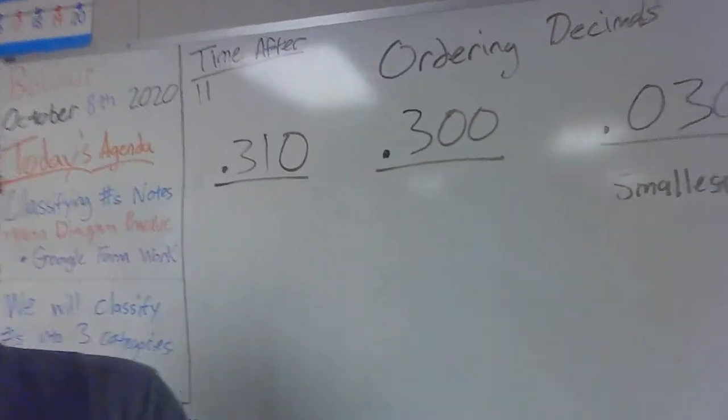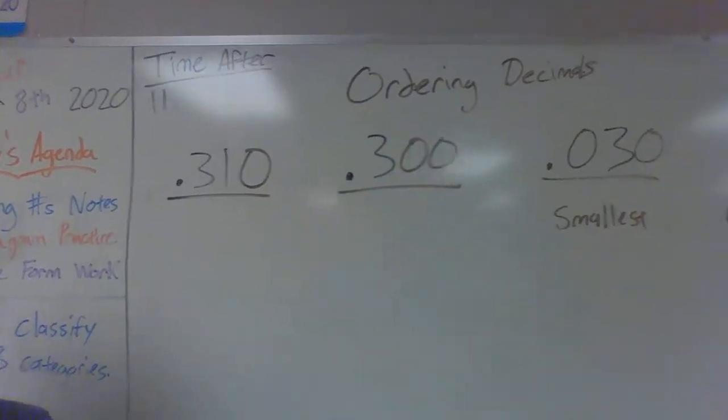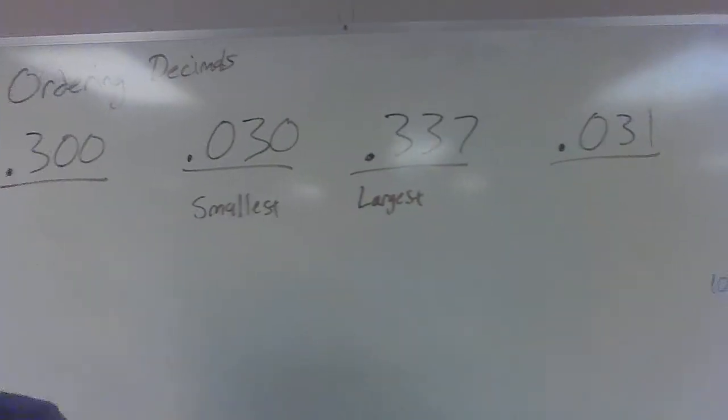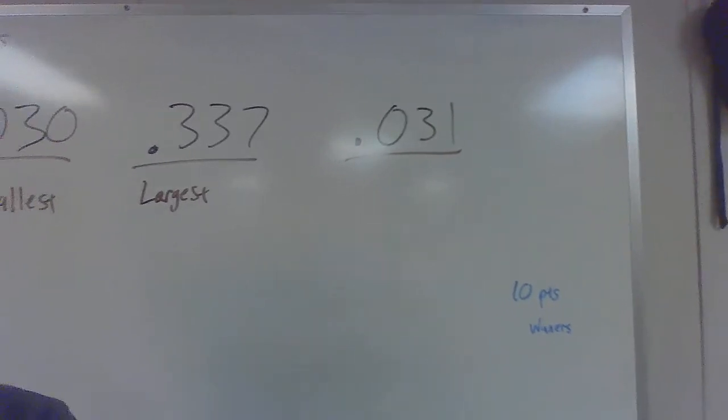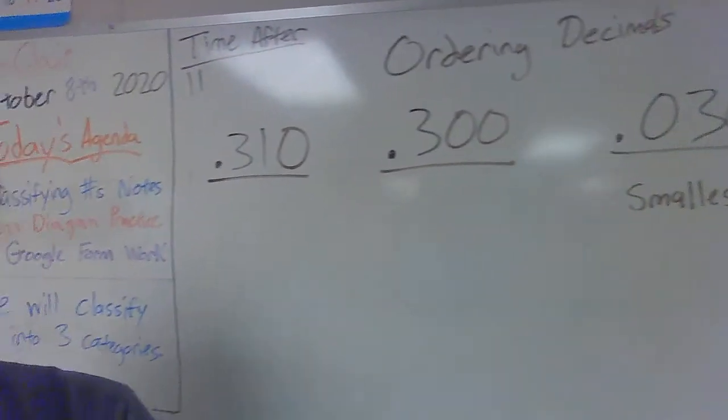Anytime you're comparing decimal values, you should add your zeros to the end until they all have the same amount of digits. That way you can compare which one is the largest and the smallest.